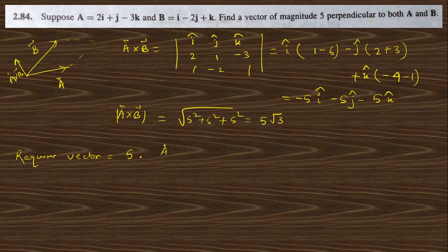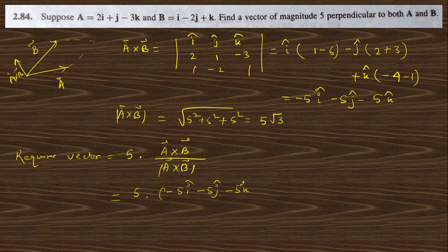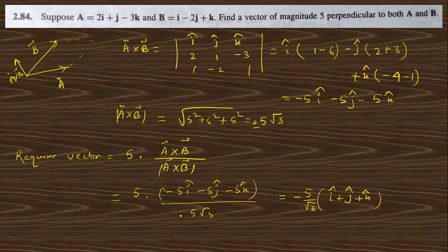The required vector is 5 × (a cross b) / |a cross b| = 5 × (−5i − 5j − 5k) / (5√3). The 5s cancel and factoring out −5 gives (−5/√3)(i cap + j cap + k cap). Since there is a ± sign, the required vector is ±(5/√3)(i cap + j cap + k cap).